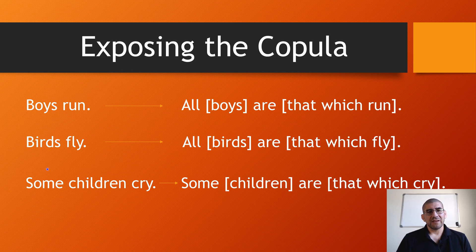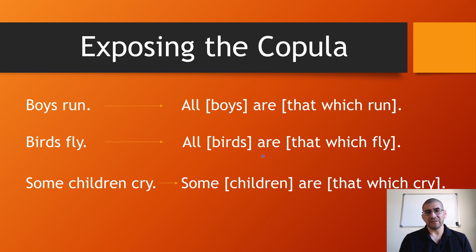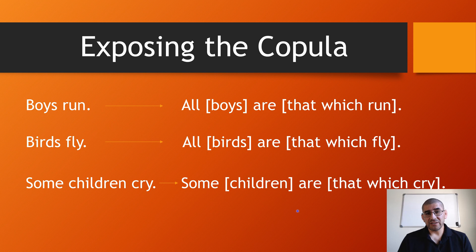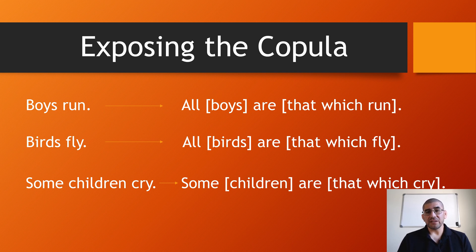Look at 'birds fly.' There's no copula, no verb 'to be.' To expose the copula: 'all birds are that which fly.' Now we clearly see the subject term, the predicate term, and the copula. For 'some children cry' — we already have the quantifier 'some,' so we don't have to add that. It becomes 'some children are that which cry.' Children is the subject term, and we turn the predicate into a relative clause.